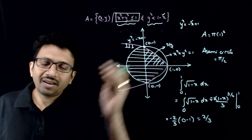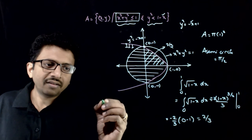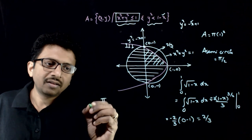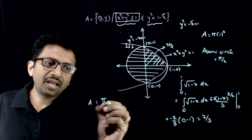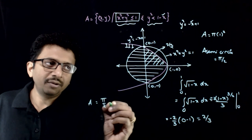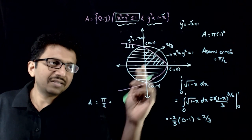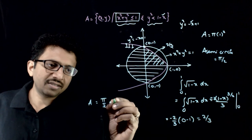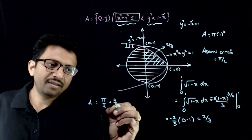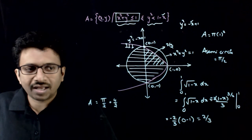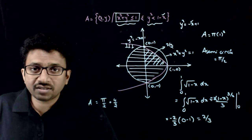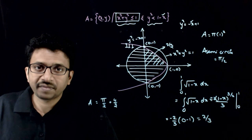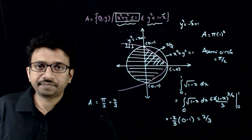So the total required area is equal to π/2 plus 2 times (2/3), that is 4/3. The answer is π/2 + 4/3. Thank you.